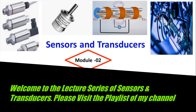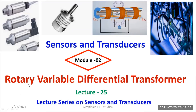Welcome to the playlist of sensors and transducers. In this video, I will be discussing the Rotary Variable Differential Transformer, in short form RVDT. It is similar to the Linear Variable Differential Transformer, which I already explained in the previous session. The link to that LVDT video is available in the i-button as well as the description box. I request you to go through that previous video before watching this one, so that you can understand the concept very easily.